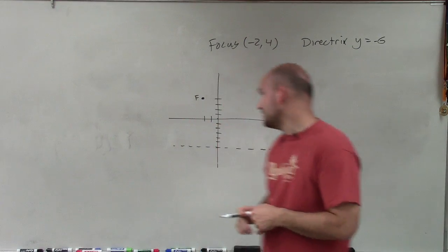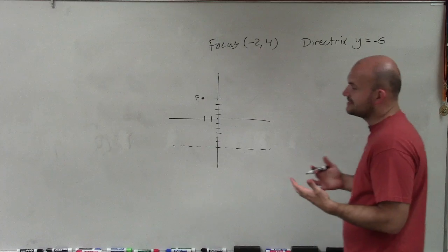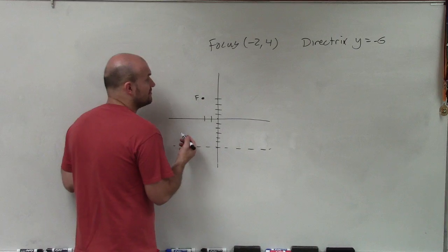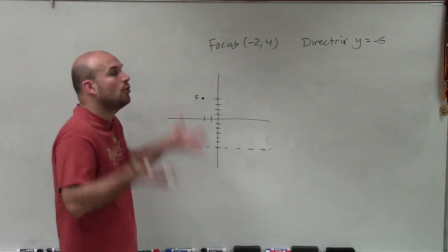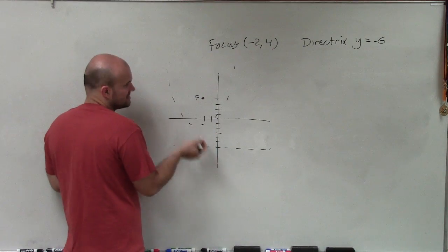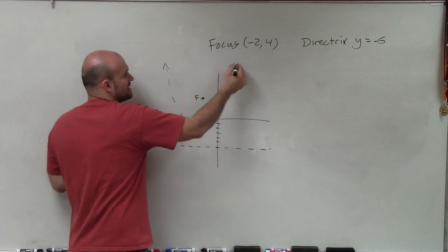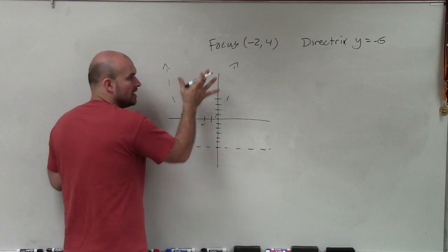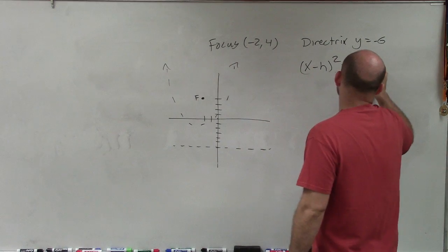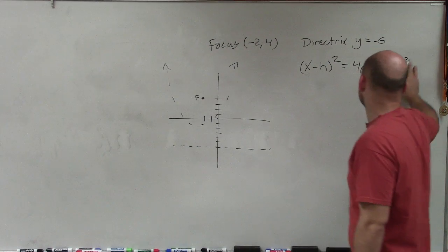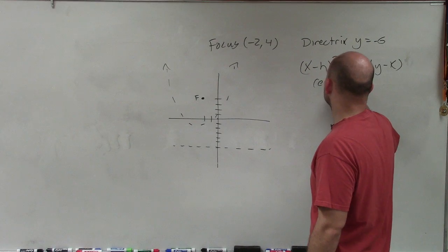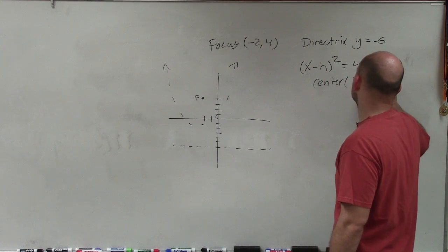Now I notice that the distance between my directrix and my focus gives me the vertex. Remember, the vertex is always going to be opening towards your focus. So my parabola is going to open upward. That tells me I can use the equation x minus h squared equals 4p times y minus k. Once I know this and figure out the center, those will be my points h and k.